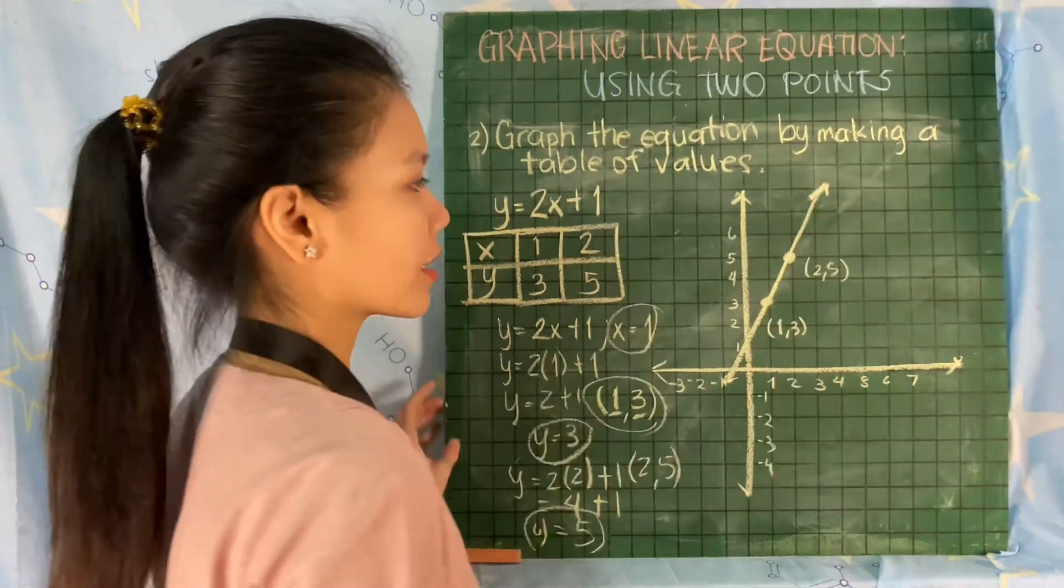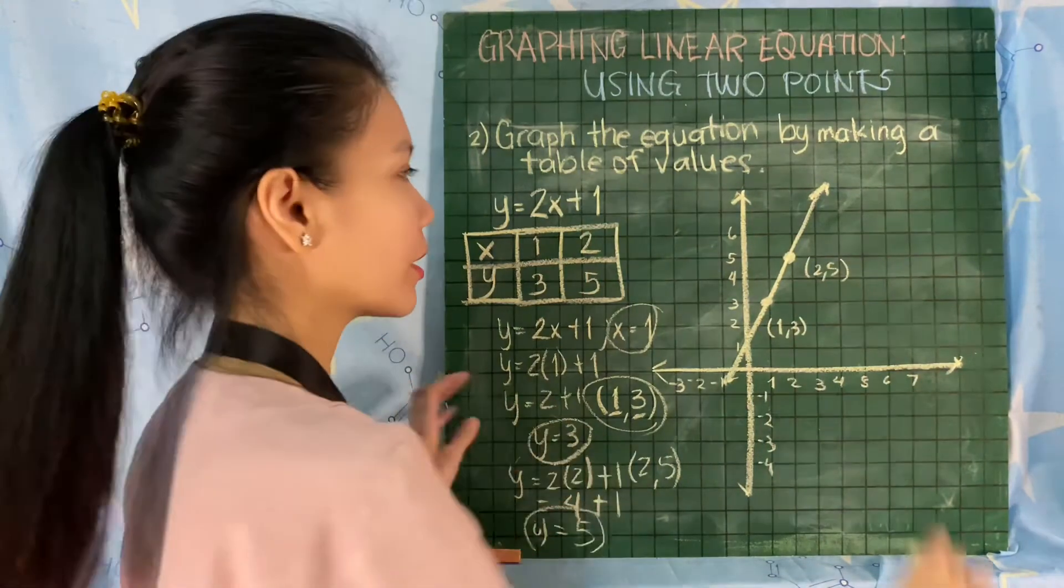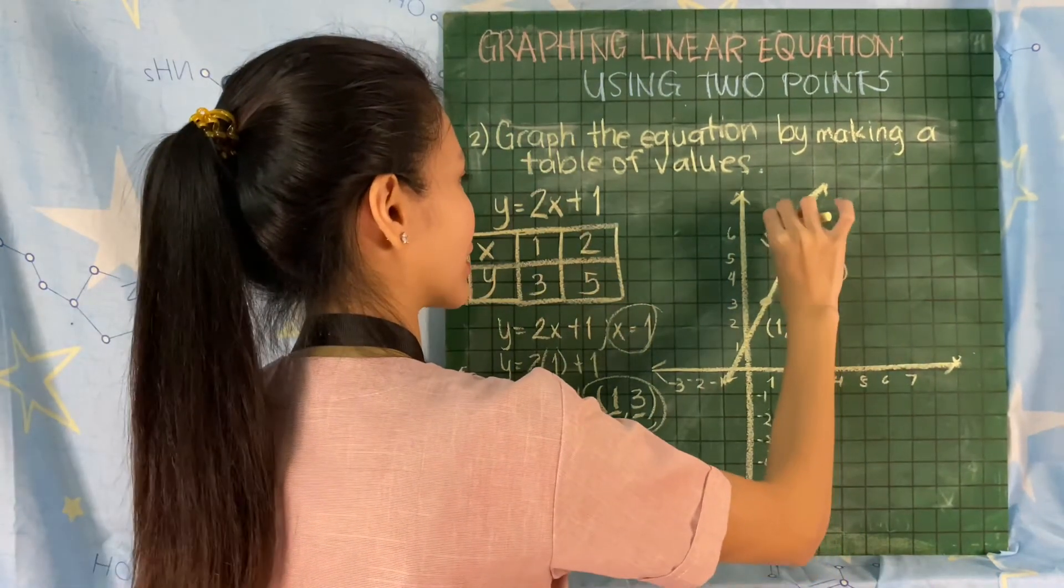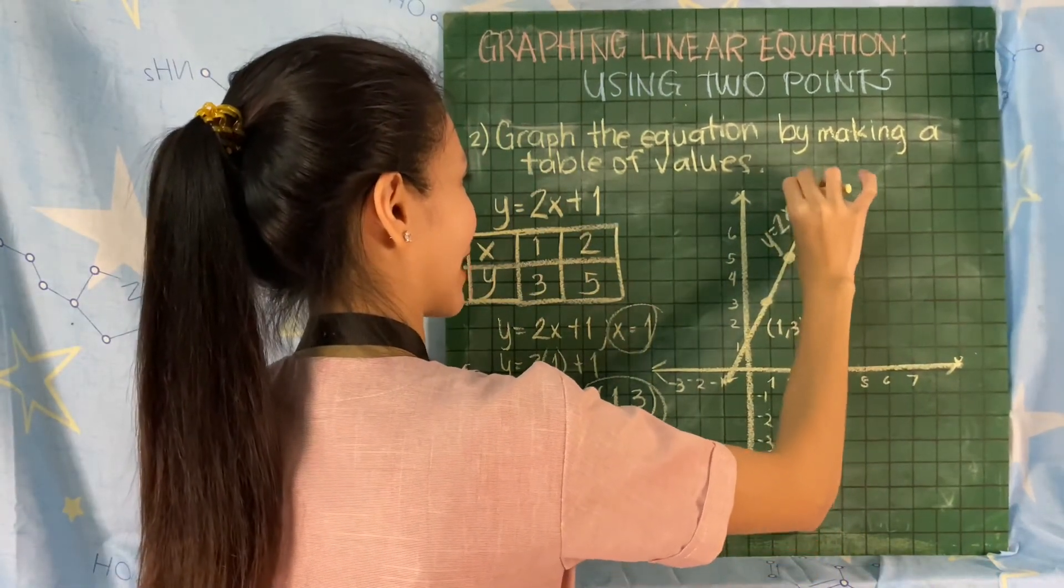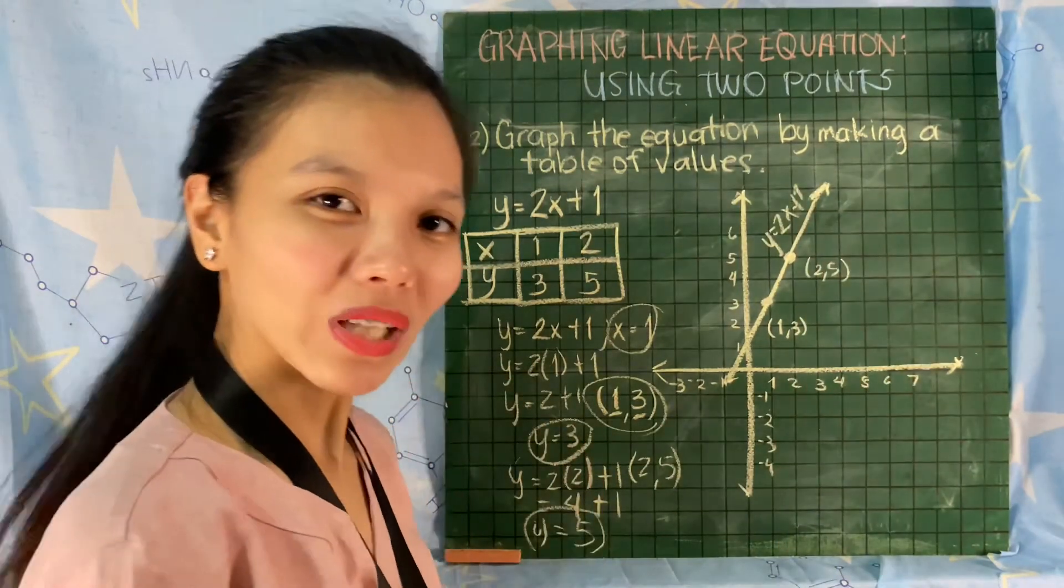It is the graph of our linear equation, which is y = 2x + 1. It's that easy to graph a linear equation, as long as you have two points. Because automatically, you can form a linear equation.